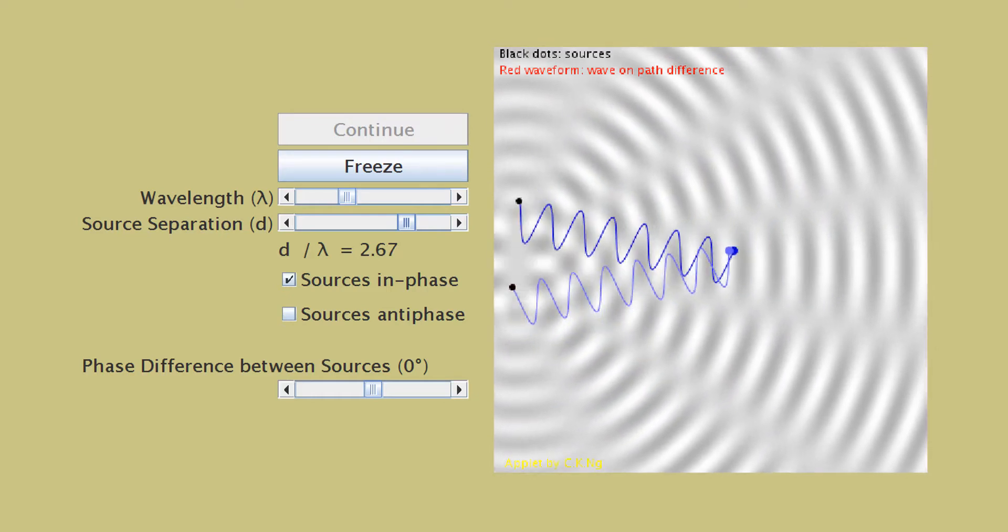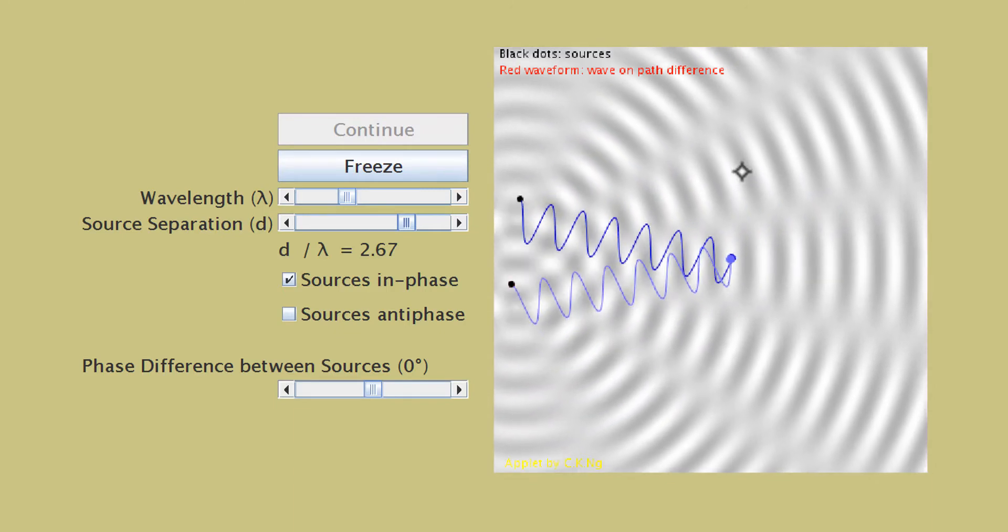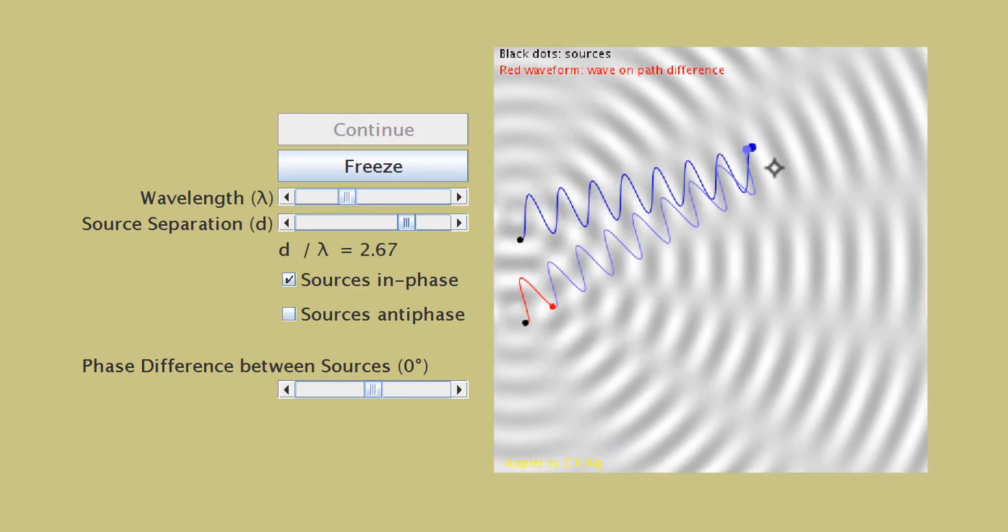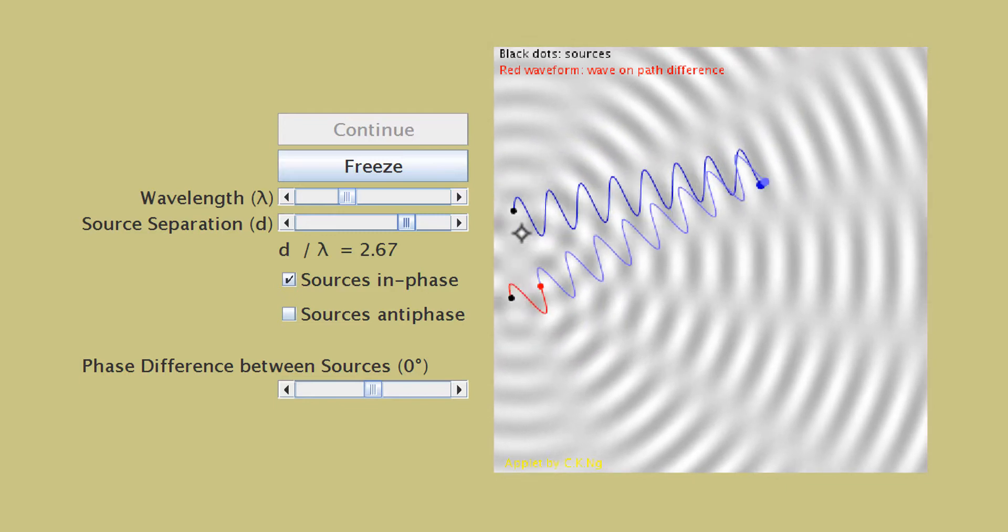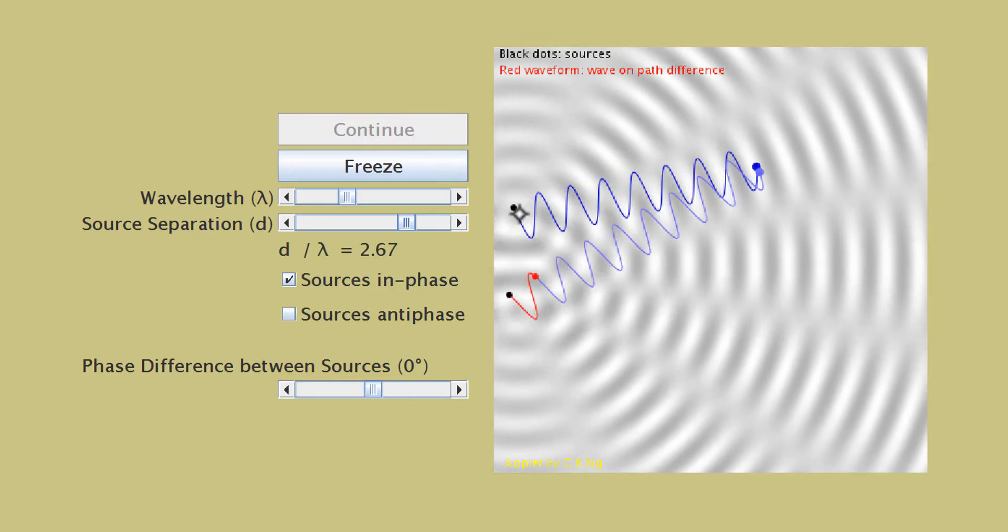Now, let's pick the point on the n equals one antinode line, for example, somewhere here. Okay, you can see that again, the waves leave the sources in phase. That's the two black dots.